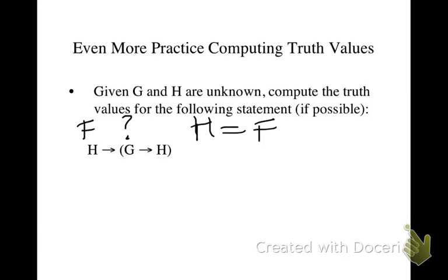Suppose H is false. Well, then the conditional as a whole is true because the antecedent is false. So if H is false, the formula is true.